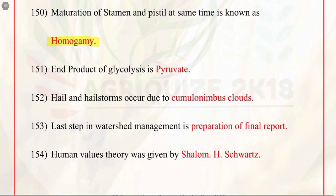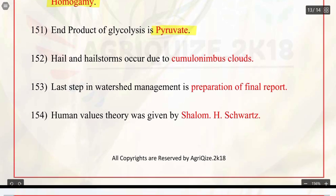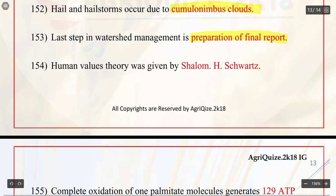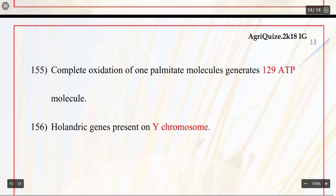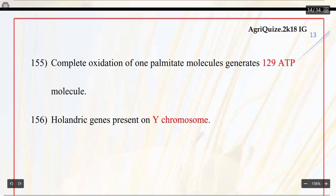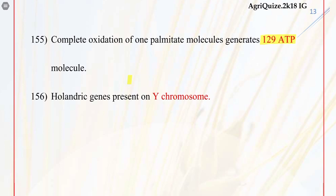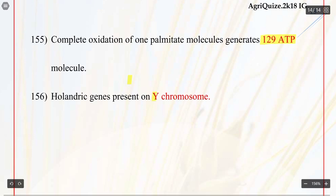Q151. End product of glycolysis is pyruvate. Q152. Hail and hailstorms occur due to cumulonimbus clouds. Q153. Last step in watershed management is preparation of final report. Q154. Human values theory was given by Shalom H. Schwartz. Q155. Complete oxidation of one palmitate molecule generates 129 ATP molecules. Q156. Holandric genes are present on Y chromosome.